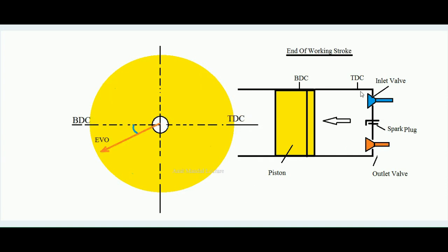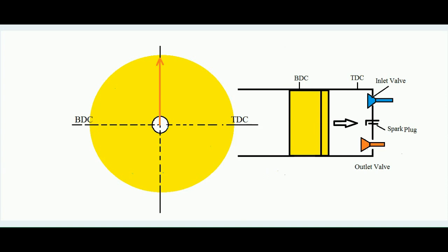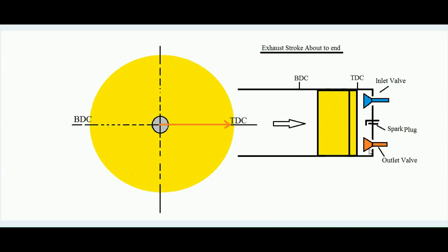Ideally the outlet valve must open at the end of the working stroke, but practically the exhaust valve (EVO) starts opening a few degrees before BDC. The reason is the same as for the inlet valve — the valve needs time to fully lift from its seat. So we start opening it a few degrees before BDC so that when the piston reaches BDC, the outlet valve is fully open, making it easy for the piston to push the burnt charge out during the exhaust stroke.